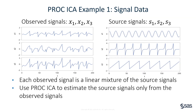The purpose of this example is to show how to use PROC ICA to estimate the source signals only from the observed signals. The observed data contain four variables: the time index variable t, and three amplitude variables x1, x2, and x3. The amplitude values at each time index constitute an observation. There are 200 observations in the data.